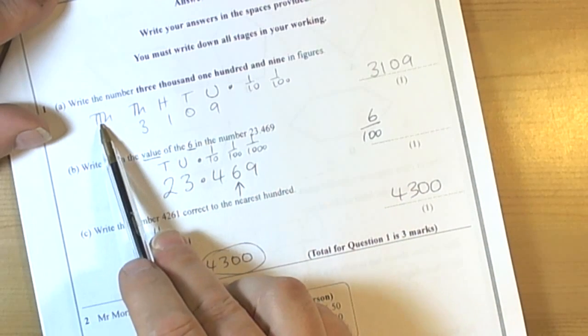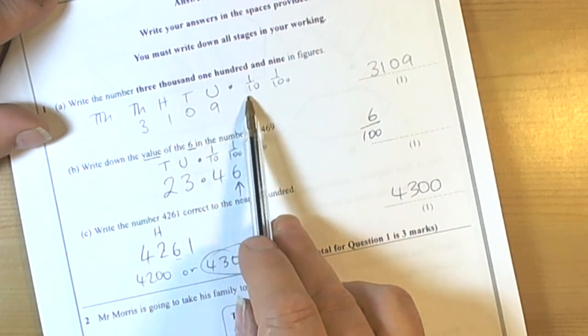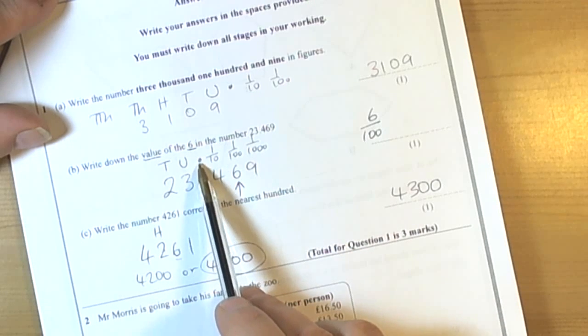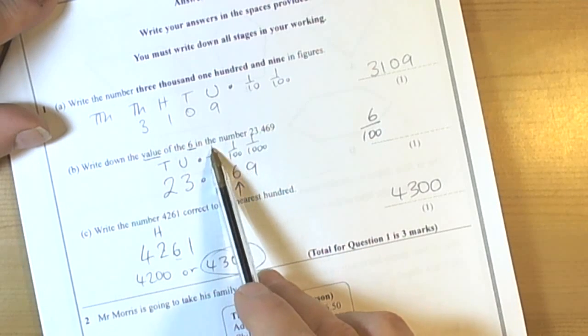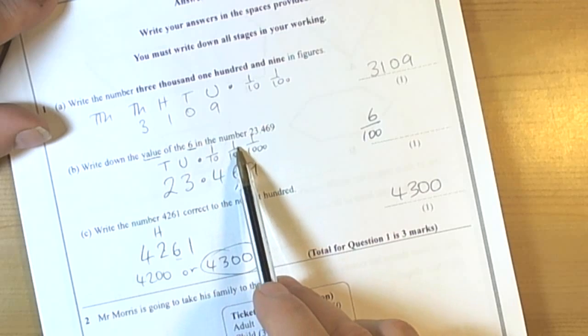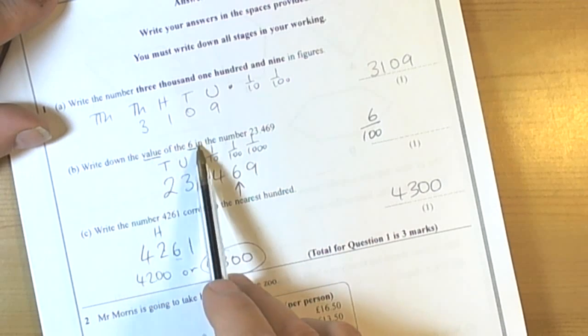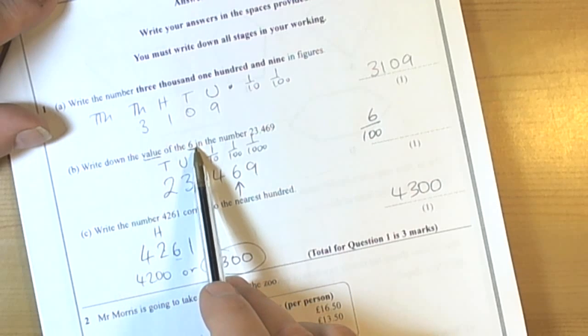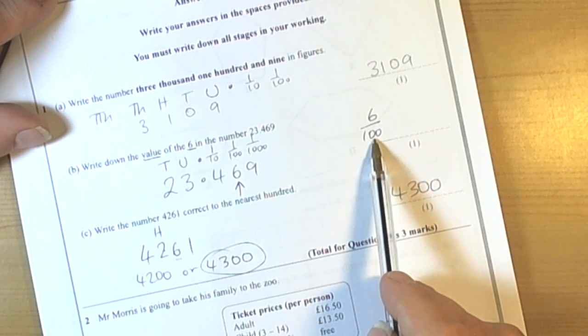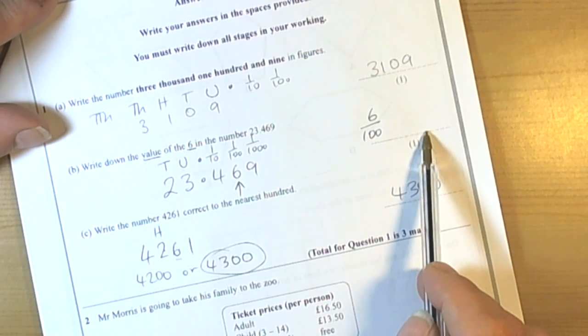So place value. Really important you remember the place value of all the digits and how the system works. Particularly after the decimal point when we're talking about the decimal fractions. Tenths, hundredths, thousandths. And remember to look carefully for what the question wanted. It wanted the value of the 6. So that was 6 hundredths. Not just the word hundredths.